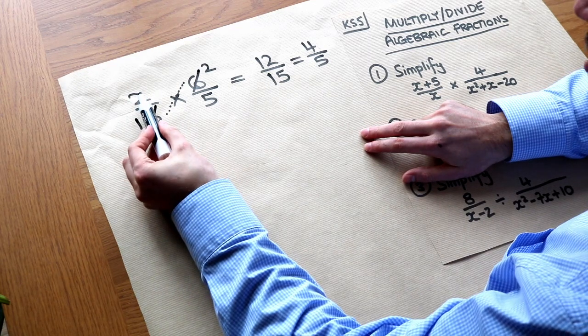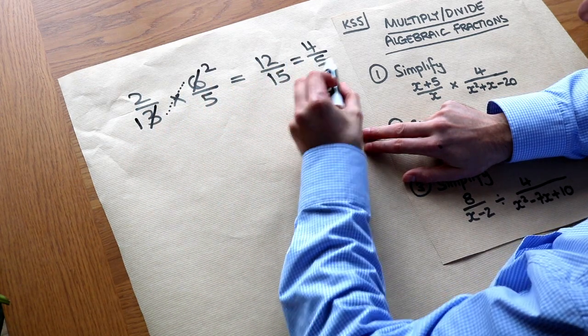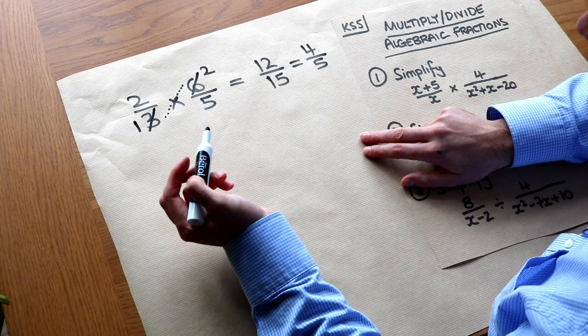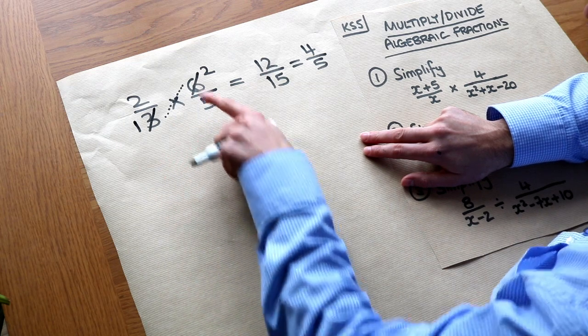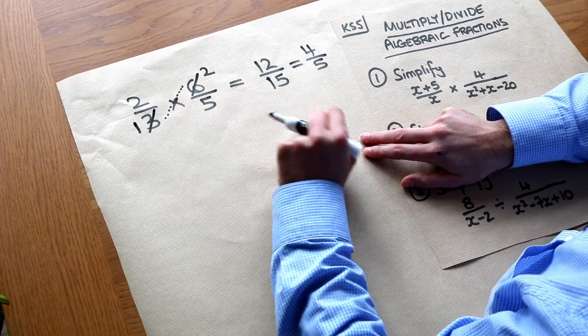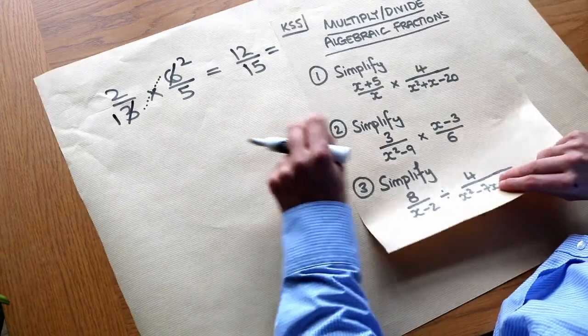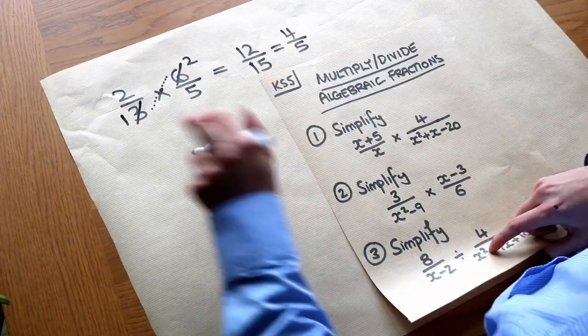And now we can just do 2 times 2 which is 4, and we do 1 times 5 which is 5. So we get the answer directly. So that's called cross-cancelling where you're identifying common factors diagonally. And we can use that principle here when we multiply algebraic fractions together.